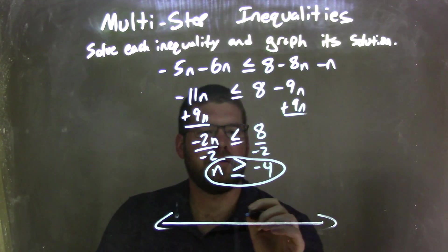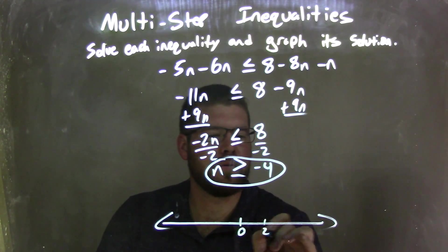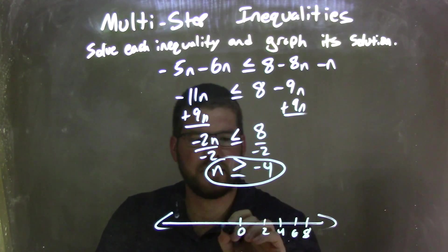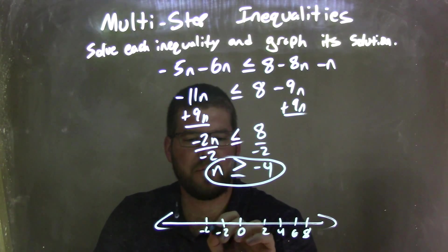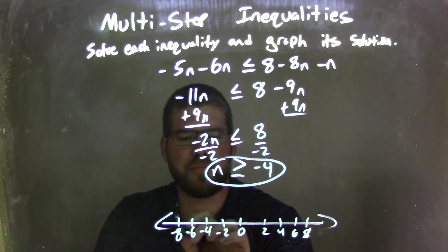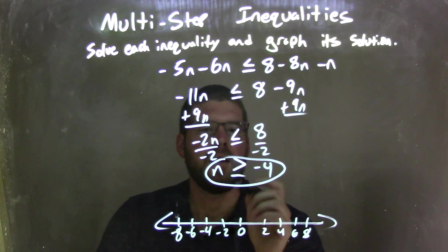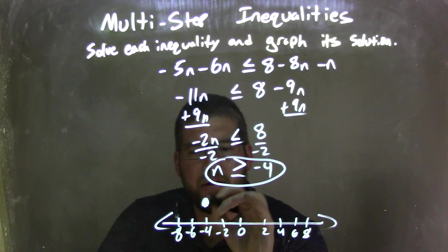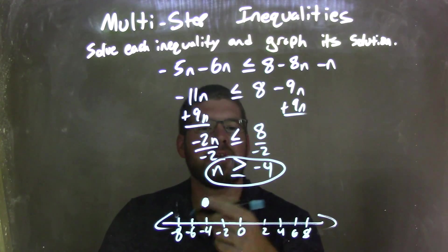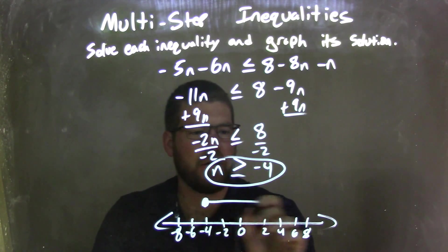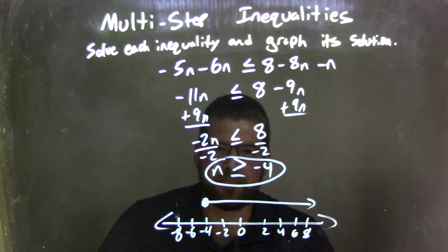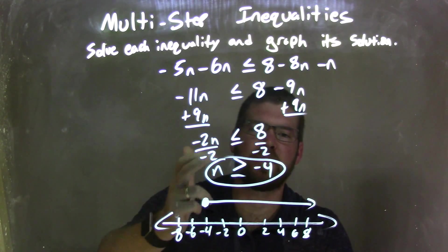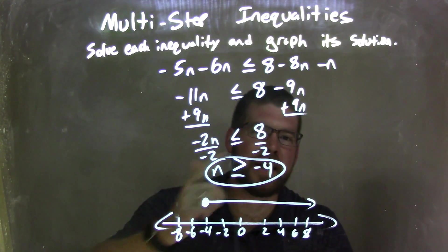So I graph it here, putting 0, 2, 4, 6, 8, negative 2, negative 4, negative 6, negative 8 on the number line. Since n can equal negative 4, we're going to put a closed circle right there at negative 4, and since n is greater than negative 4, we'll put the arrow to the right. Now we have a graph that matches our inequality, which is n is greater than or equal to negative 4.